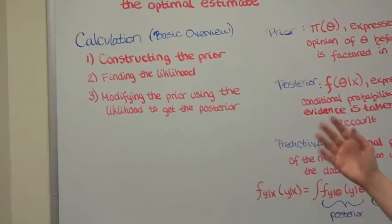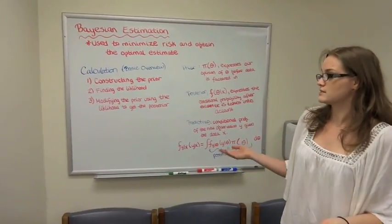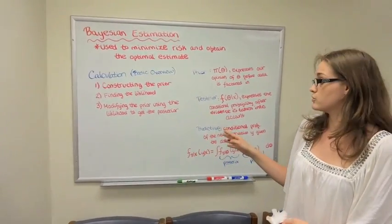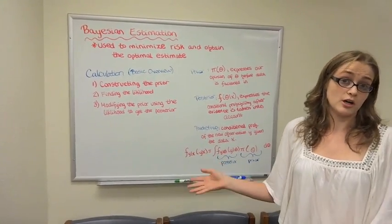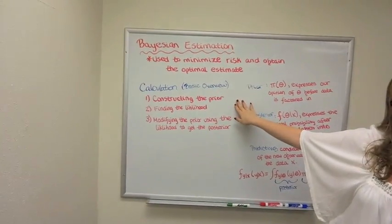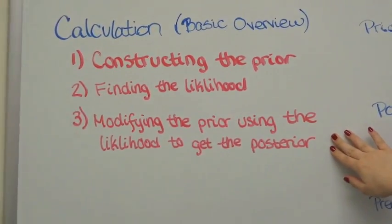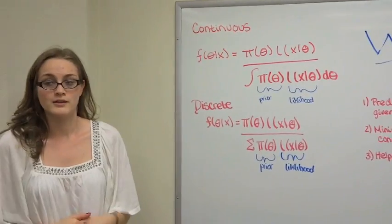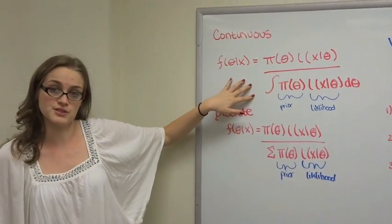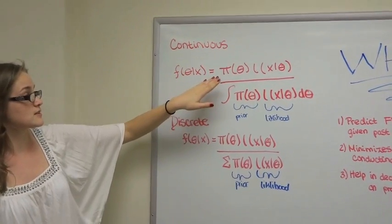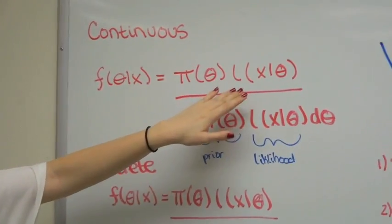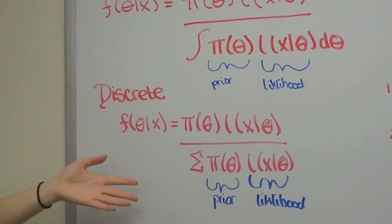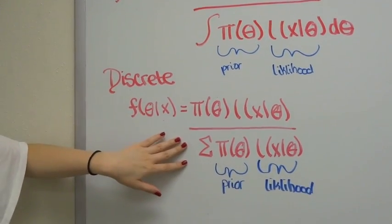To calculate Bayesian estimation — note this is not the only way, just a basic overview for simple problems — first construct your prior distribution, then find the likelihood, then modify the prior using the likelihood to get the posterior distribution. For the continuous case, the posterior is the prior times the likelihood over the integral with respect to θ of the prior times the likelihood. The discrete case is the same except you use a summation instead of an integral.